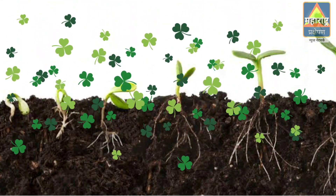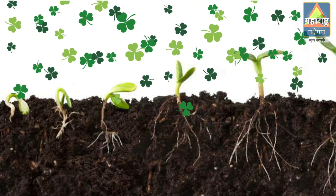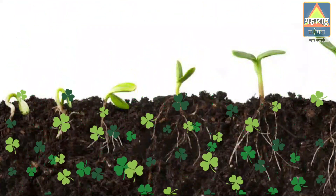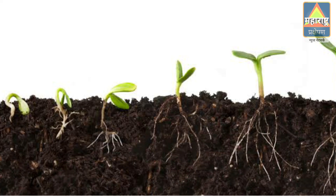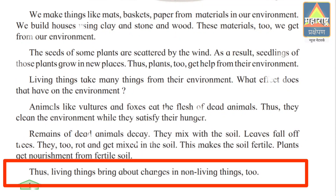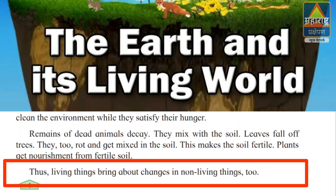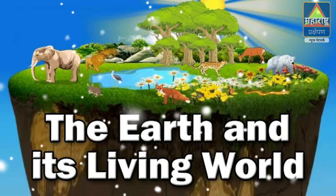Leaves fall from trees. They too rot and mix with the soil. This makes the soil fertile. Plants get nourishment from the fertile soil. Thus living things bring about changes in non-living things too.